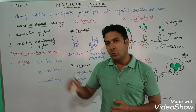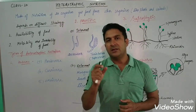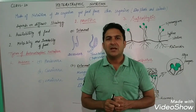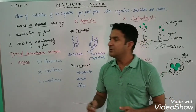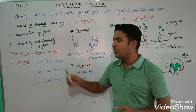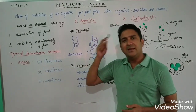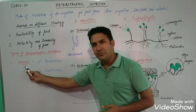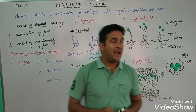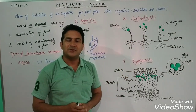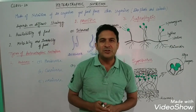To obtain food, considering these factors, heterotrophic organisms have different kinds of strategies. After the strategies, we will discuss the different types of heterotrophic mode of nutrition. These are mainly three types: holozoic mode of nutrition, parasitic mode of nutrition, and saprophytic mode of nutrition.